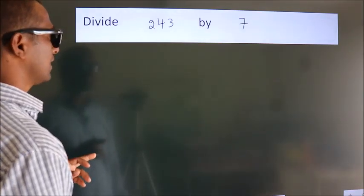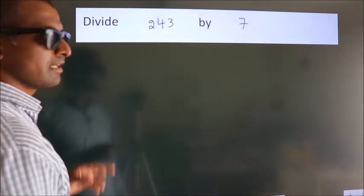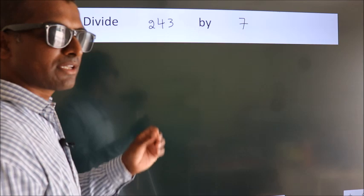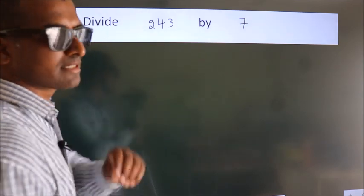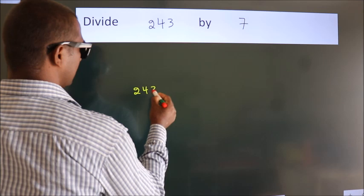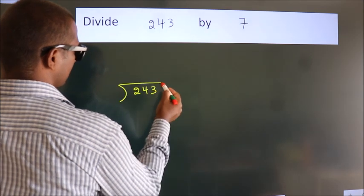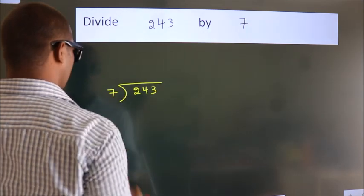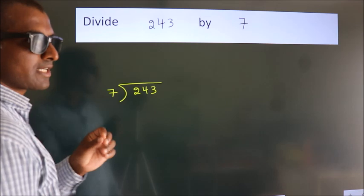Divide 243 by 7. To do this division, we should frame it in this way. 243 here, 7 here. This is your step 1.